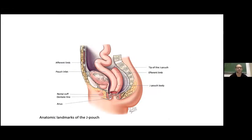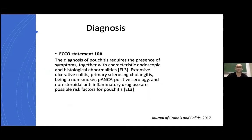The J pouch is the most common pouch utilized today. When performing pouchoscopy, it's important to intubate the afferent limb, as this is where one may find features of de novo Crohn's disease — look for fistula tracts, stricturing, deep serpiginous ulceration, or cobblestoning. ECCO states that making a diagnosis requires the presence of symptoms together with characteristic endoscopic features as well as histology. Risk factors for pouchitis include extensive UC, PSC, being a non-smoker, positive P-ANCA serology, and use of NSAIDs. Our patient had extensive UC and was a non-smoker, though we don't have P-ANCA serology.